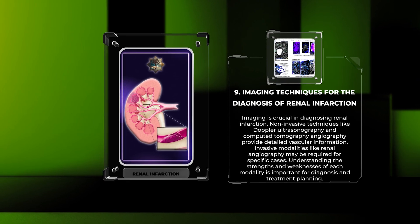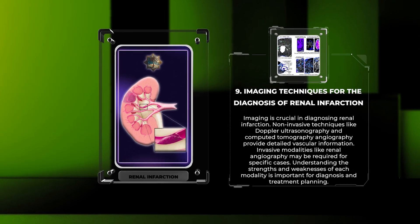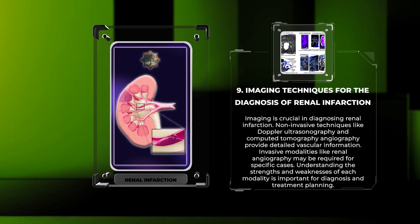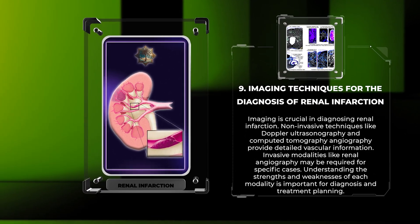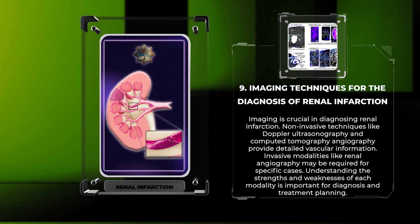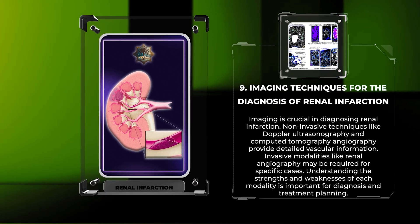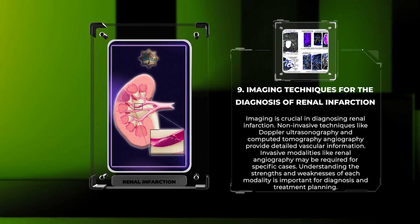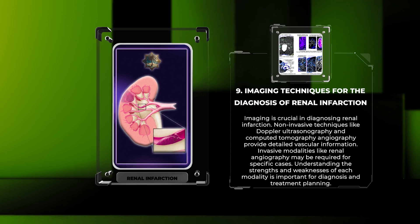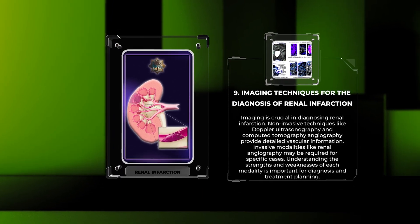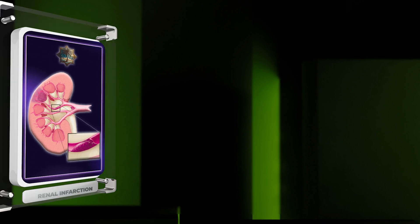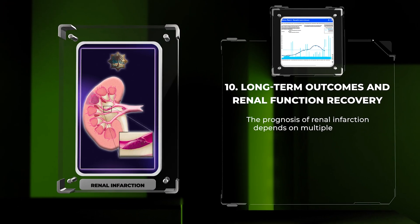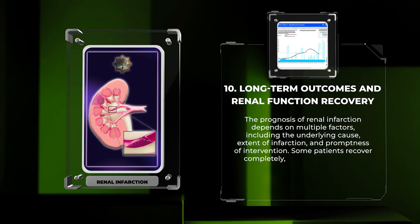Imaging is crucial in diagnosing renal infarction. Non-invasive techniques like Doppler ultrasonography and computed tomography angiography provide detailed vascular information. Invasive modalities like renal angiography may be required for specific cases. Understanding the strengths and weaknesses of each modality is important for diagnosis and treatment planning.